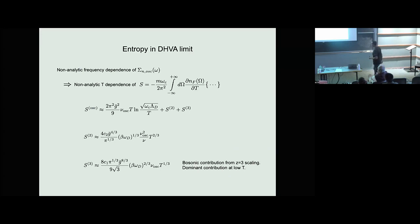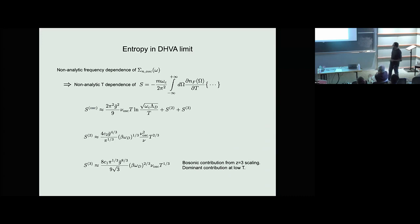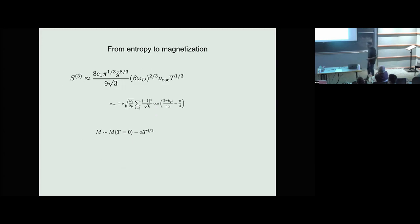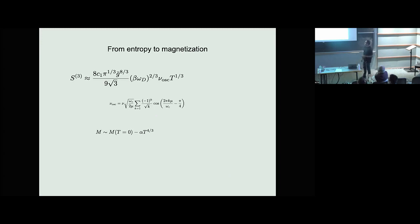The last contribution, which takes the longest to show but is quickest to describe, comes from the bosonic degrees of freedom: the fermionic self-energy being Omega^(2/3) along the extremal orbit, combined with the Z equals three dynamical scaling laws, gives an even more singular contribution — it goes like T to the one-third. Notice that all of these oscillatory entropies vanish as T goes to zero, so no laws of physics are violated. At low temperatures the T^(1/3) contribution dominates. Keeping only this, the amplitude is proportional to sqrt(Omega_C / E_Fermi). Using Maxwell relations, the magnetization has a constant part at zero temperature minus a piece that falls off as T to the four-thirds.